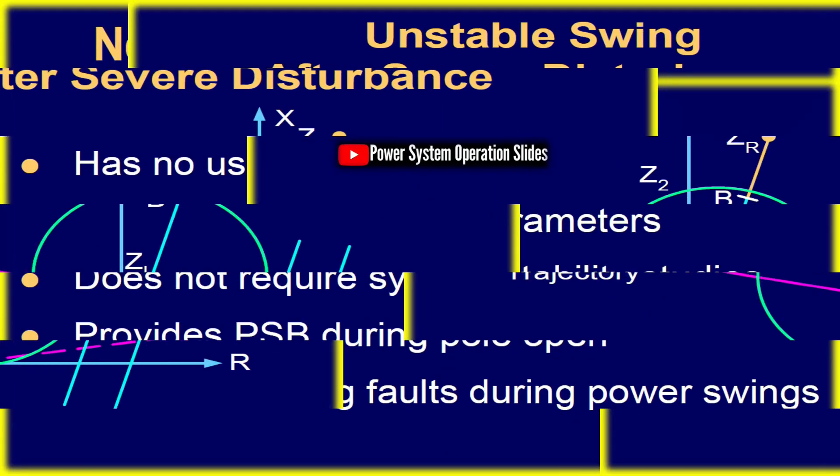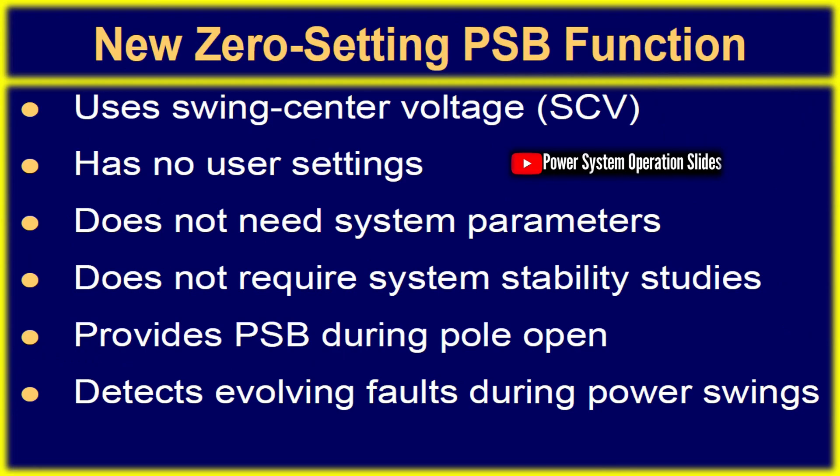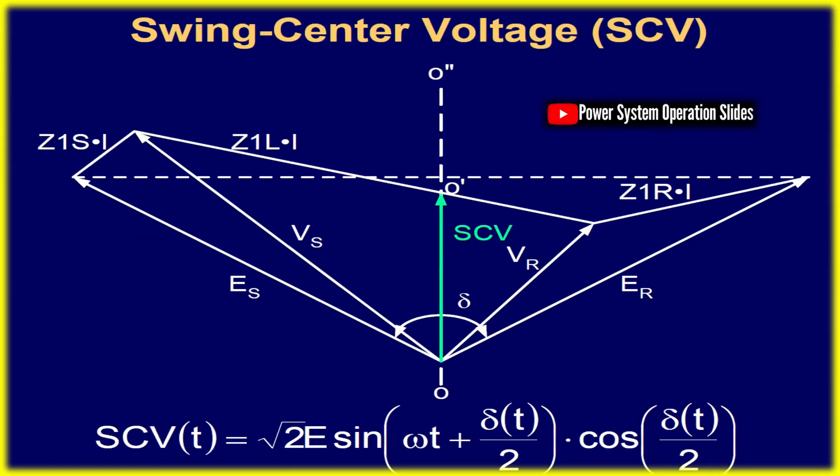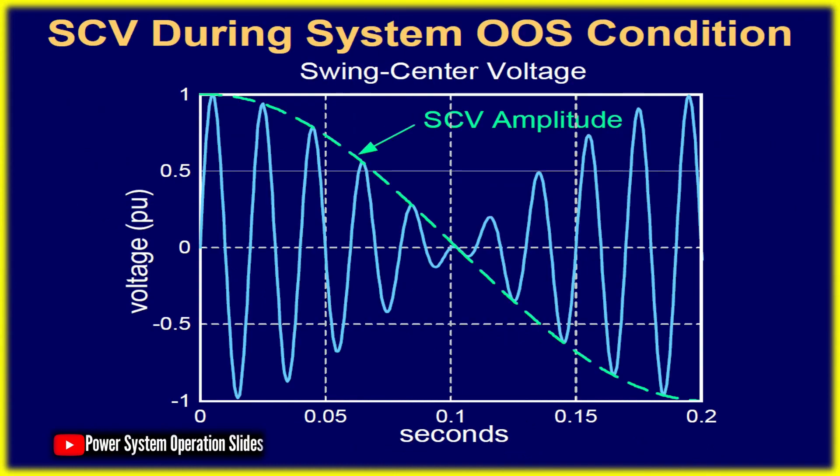Under normal steady-state conditions, all synchronous generators operate near their nominal frequency, balancing mechanical torque with electrical power output. If disturbed, differences in generator speeds cause shifts in rotor angles. Initially, the system self-corrects by redistributing loads among generators. However, excessive angular differences can reduce power transfer, potentially leading to sustained instability.